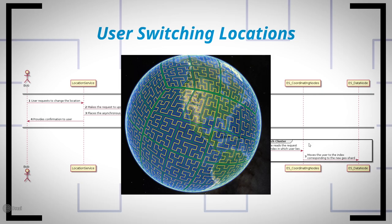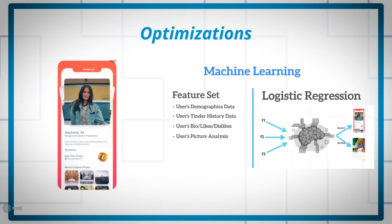This brings us to the optimizations section. Your interviewer might ask how you can improve the design further. As shown in the fetch user recommendation section, nearby geo-sharded indexes are queried to return a list of users to match with. We can refine those search results based on the user's preferences or past swiping activity. Machine learning comes to mind here — we can apply ML before returning the list of users to maximize the chance of a match.